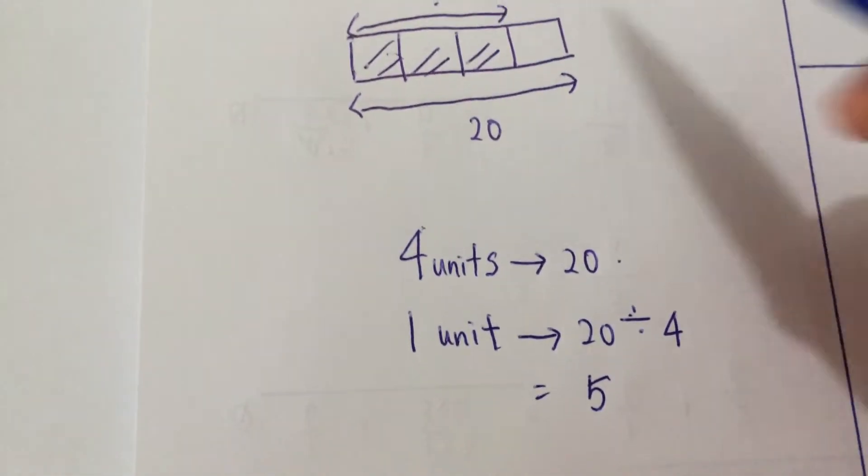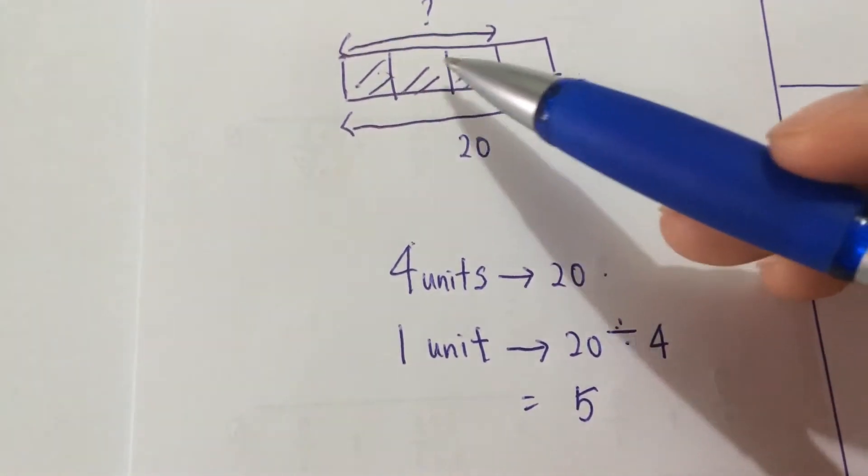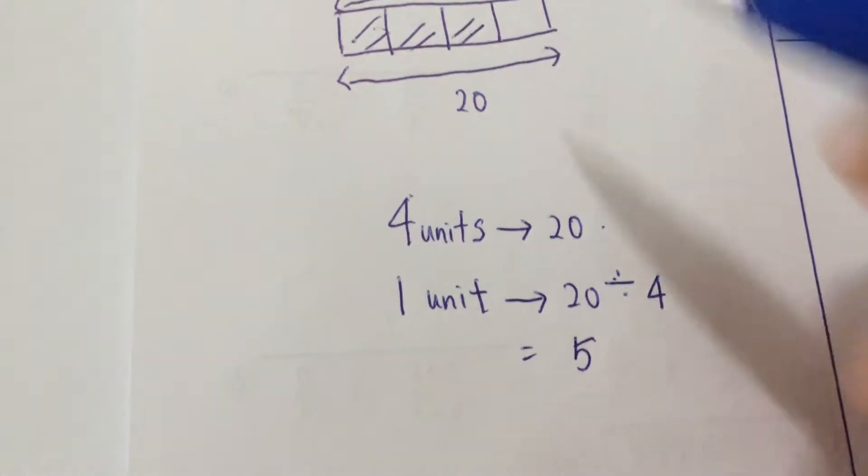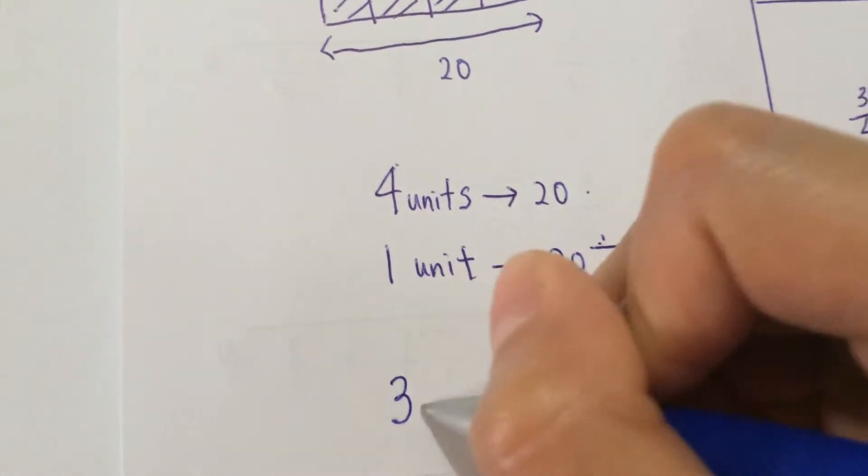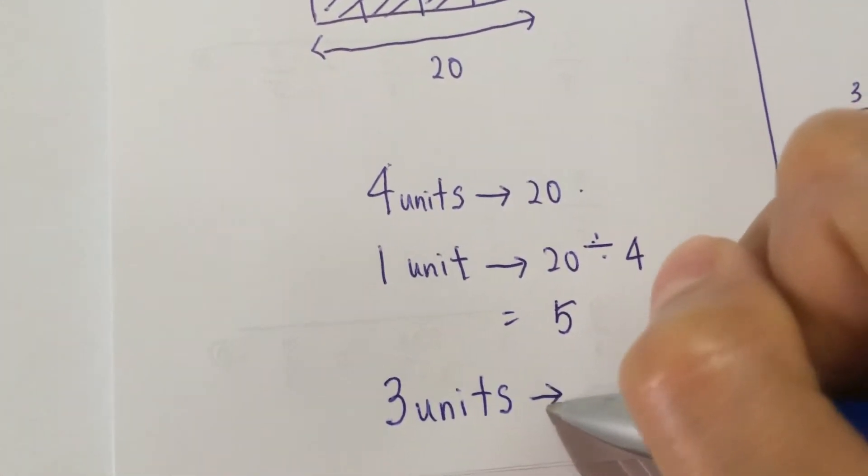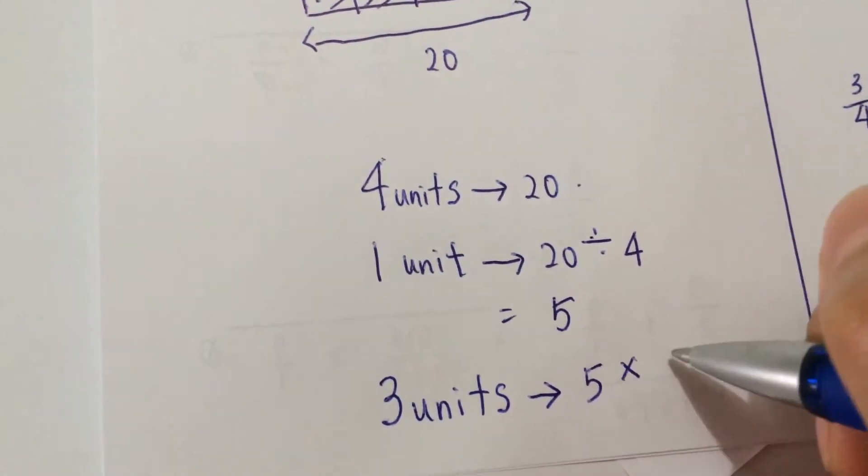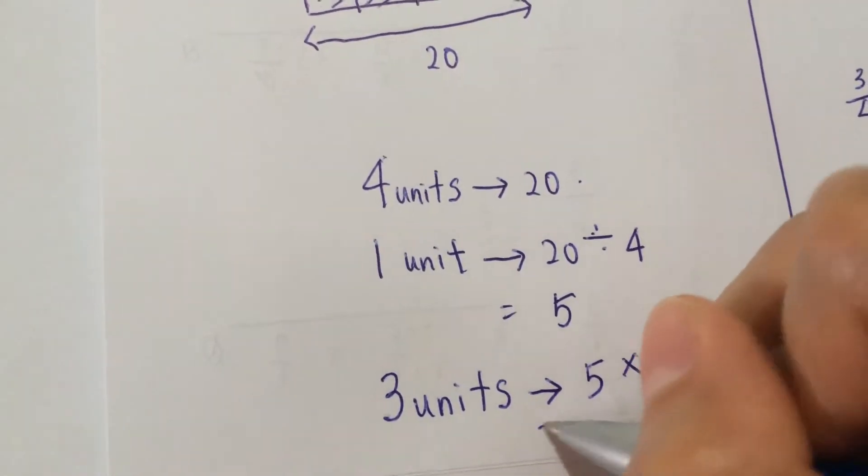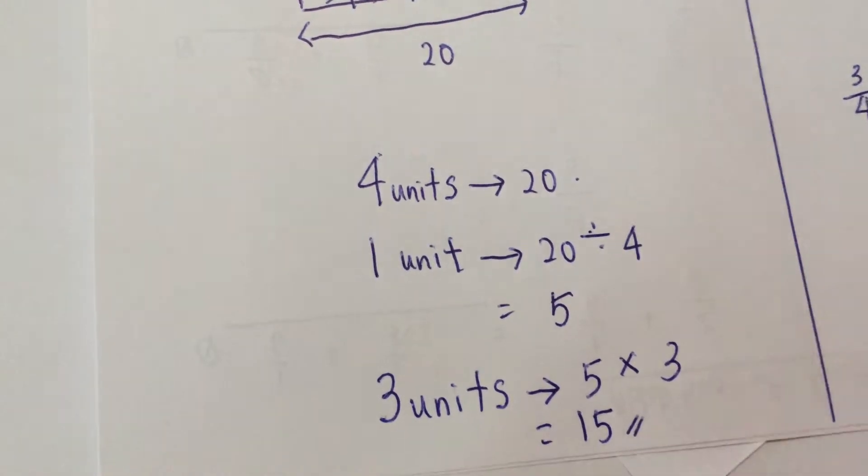Now, you want to find 3 units. So, go ahead to find 3 units. 3 units would be 5 times 3. That would be 15.